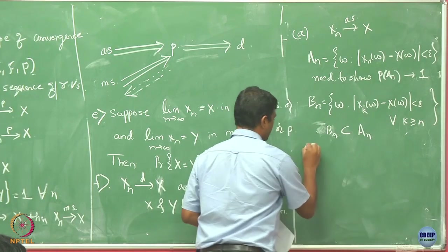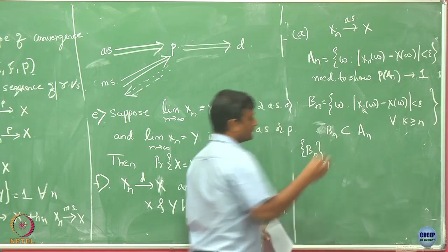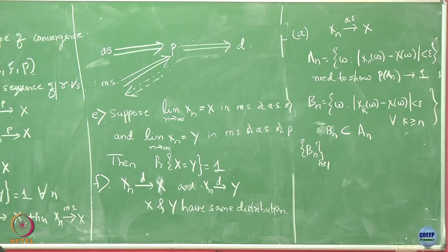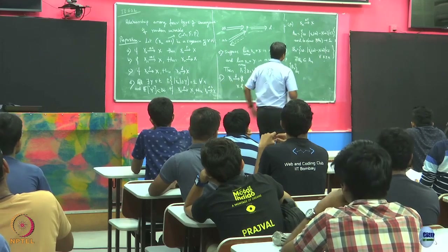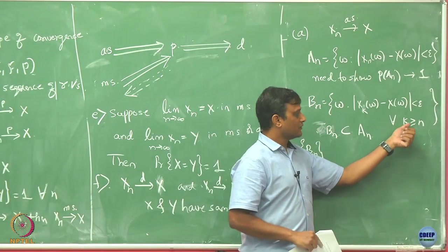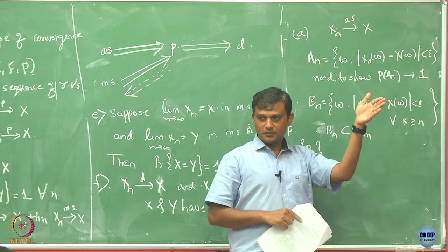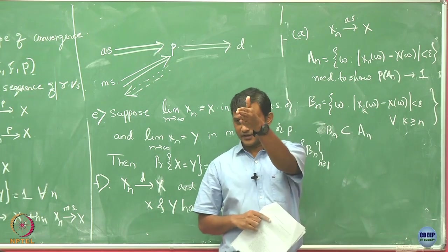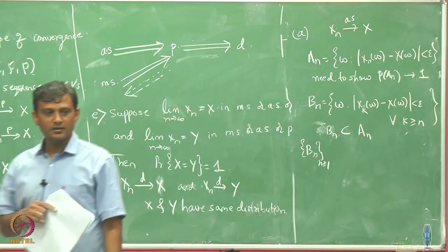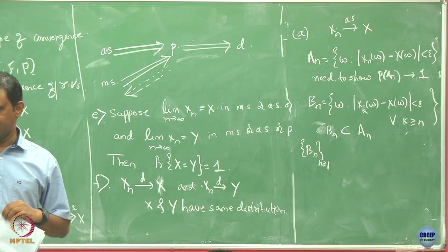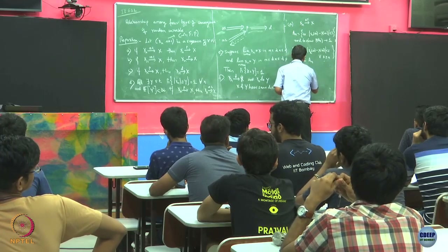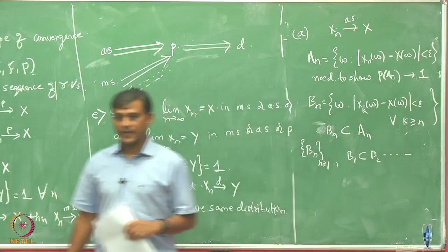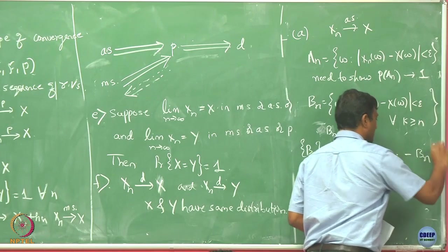The sequence of B_n's is monotonically increasing. As n increases, I only want conditions satisfied for fewer indices, so the set grows. Because of this monotone structure, the limiting set B is the union of all B_n. By continuity of probability applied to this monotone sequence, P(B_n) converges to P(B) as n goes to infinity.